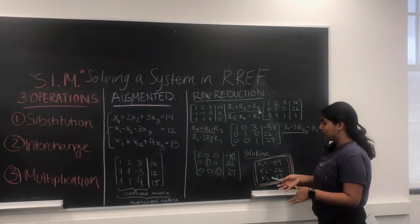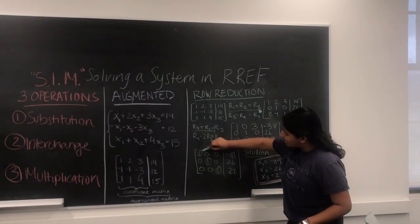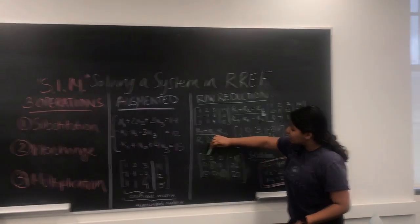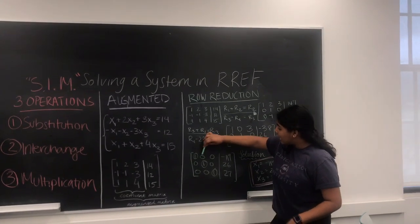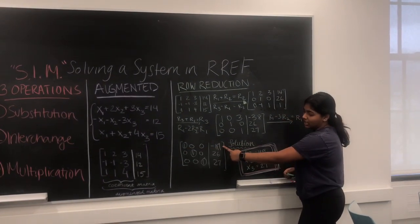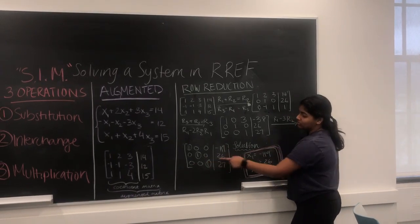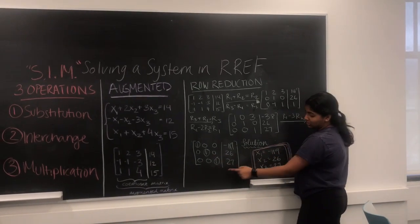And then here we get it into our identity matrix form, which gives us three pivots, and then we get our solution: x1 equals negative 119, x2 equals 116, and x3 equals 2.